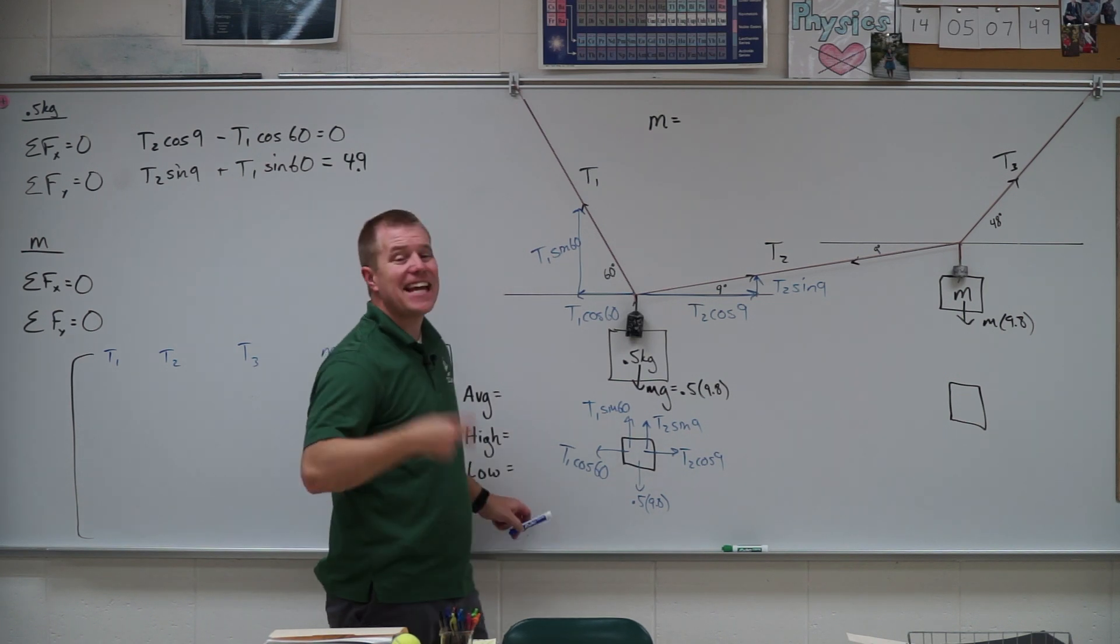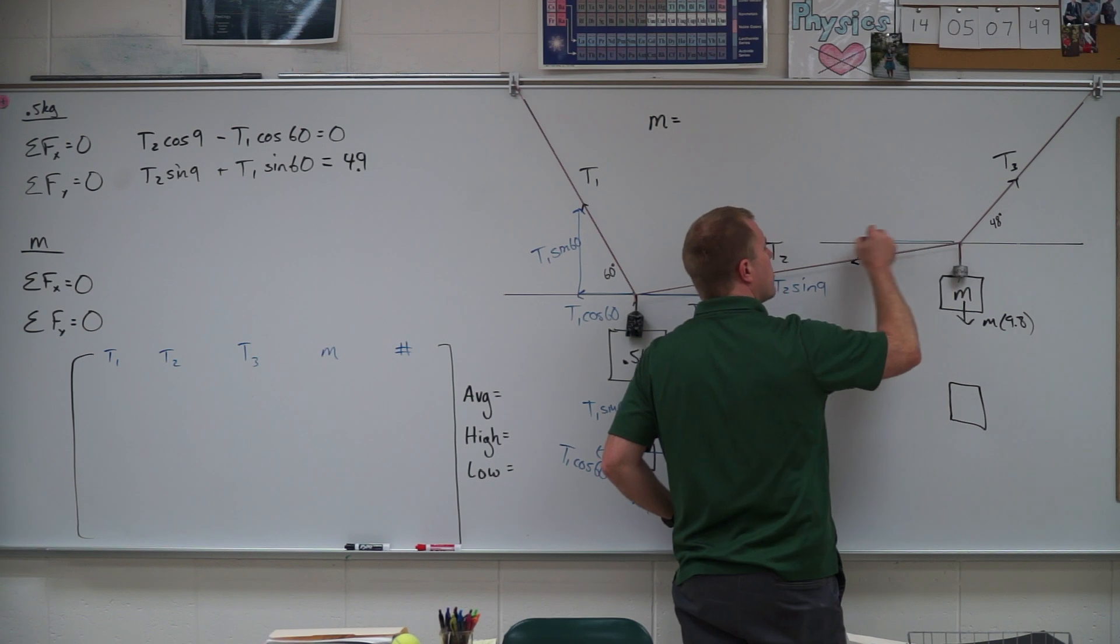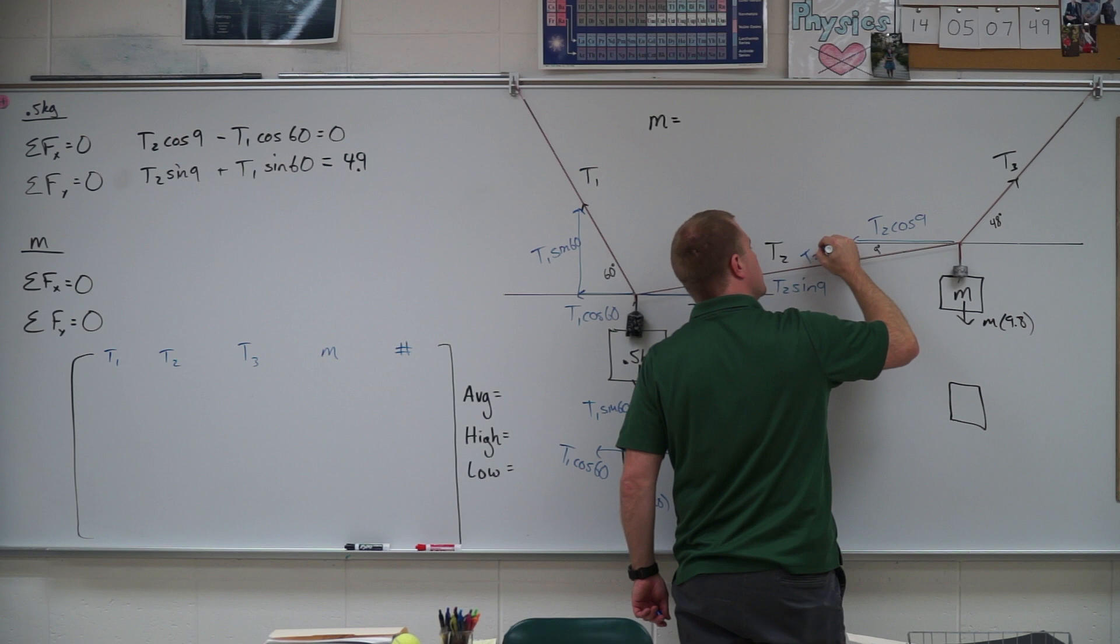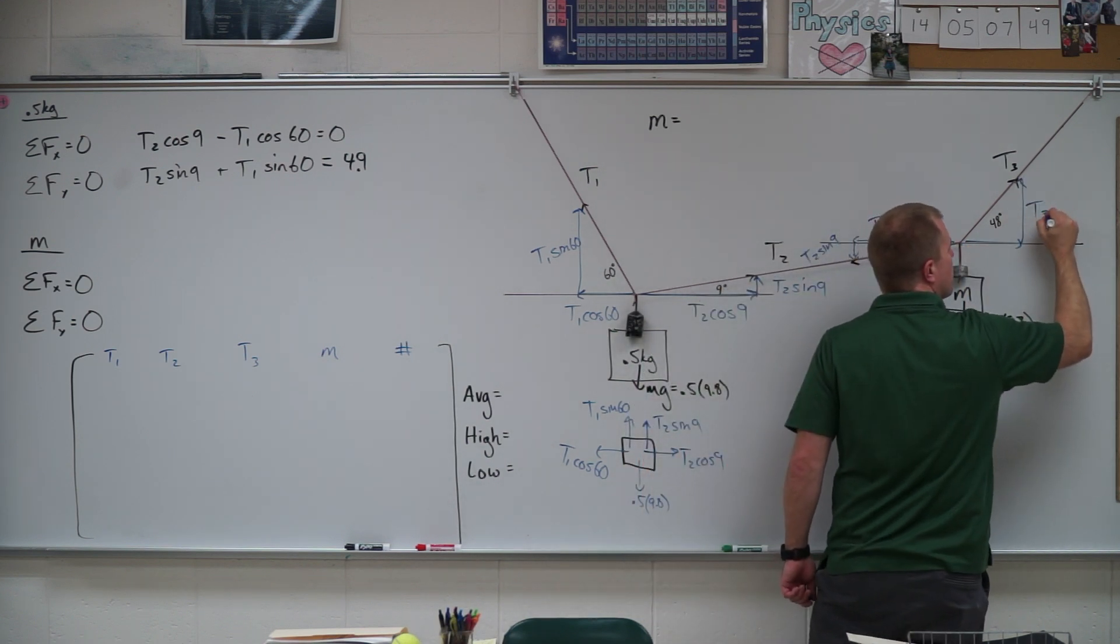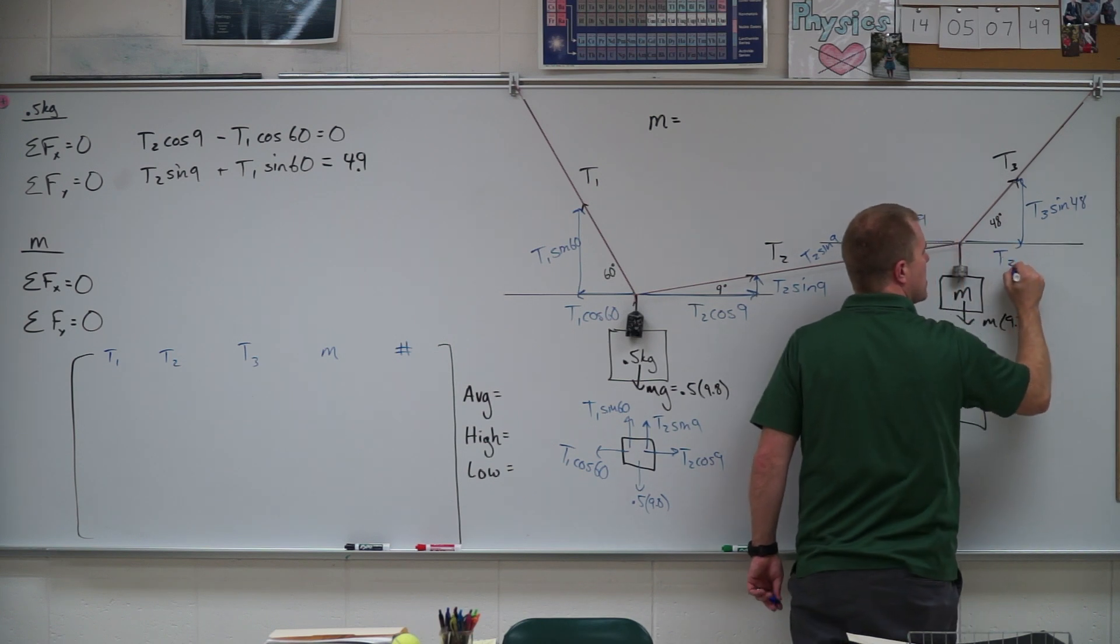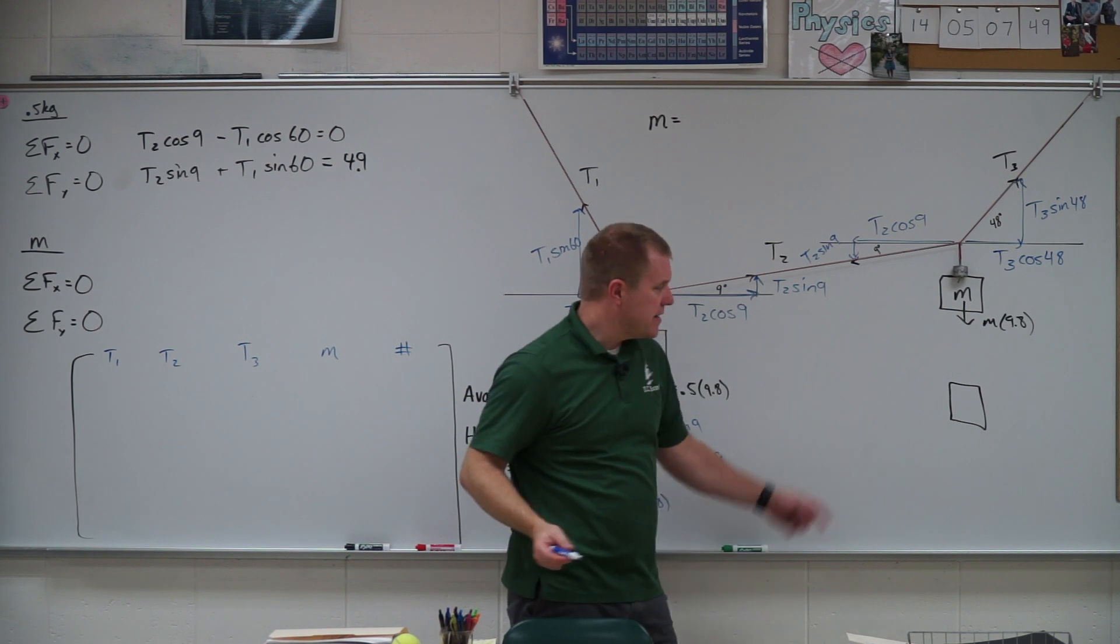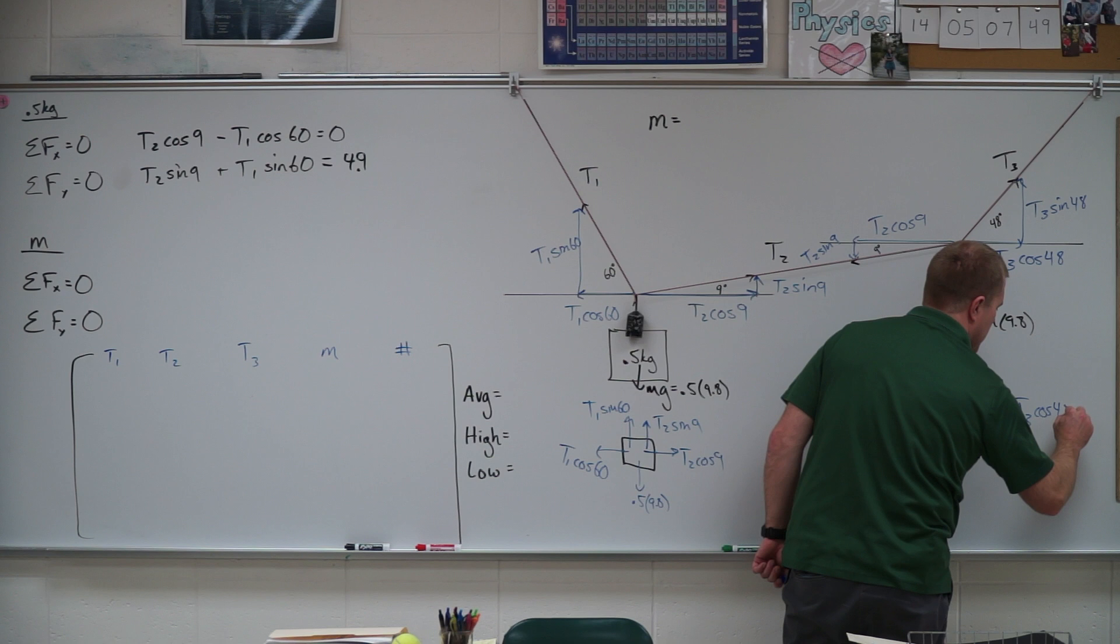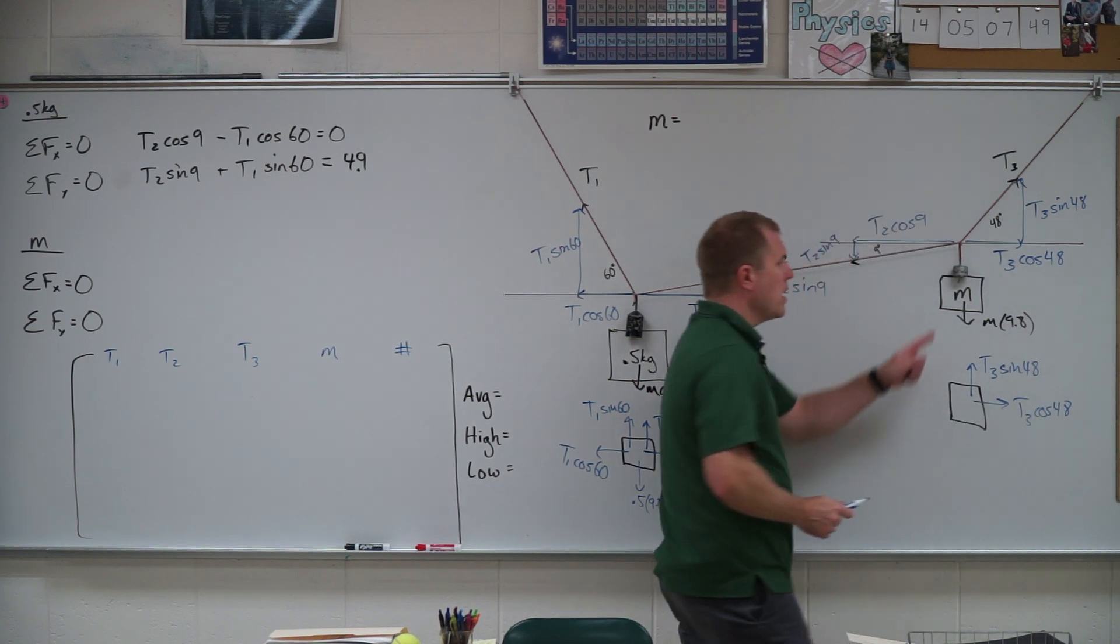So now I need to create my second two equations. So that goes by free body diagram over here. So again, we are going to resolve these into components. So I have T2 cosine of 9, T2 sine of 9, T3 sine of 48, T3 cosine of 48. Redraw that down on my picture just so I can see everything that's going on here. So I have T3 cosine of 48, T3 sine of 48.